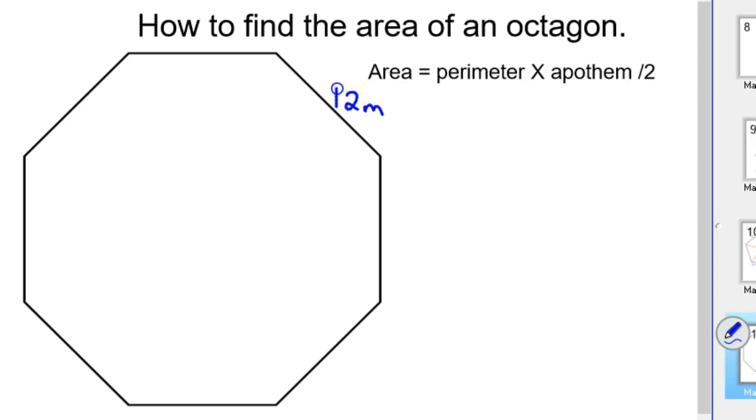So here's the formula for the area of any regular polygon. You find the perimeter of the polygon, multiply that times the apothem, and divide by 2. Now you may not know what the apothem is, but hopefully by the end of this video you'll have it figured out.